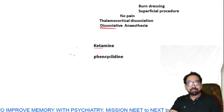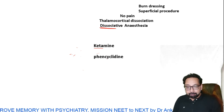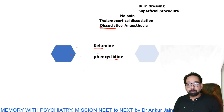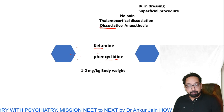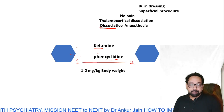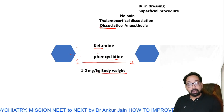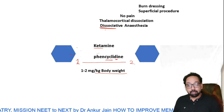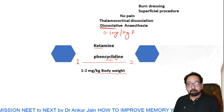Ketamine is a phencyclidine derivative. To remember: 'cycli' means cyclical structure, 'di' means two — so there are two cyclical structures. We can remember its dose by writing one, two: it is 1 to 2 milligram per kilogram body weight IV. For dissociative anesthesia, the dose is very low — around 0.1 milligram per kilogram body weight.